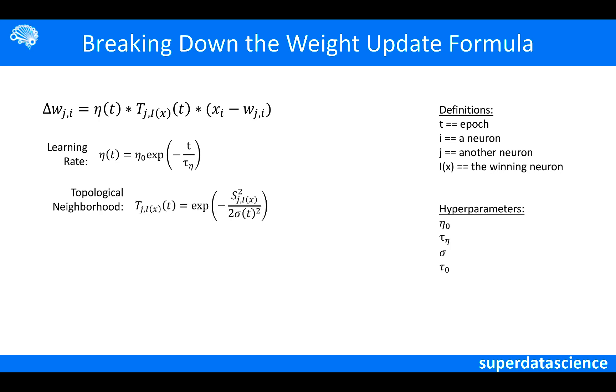The second variable is a topological neighborhood. It depends on the distance between neurons, the capital S, and also the neighborhood size, the sigma variable. The capital S is the lateral distance between neurons, and it is the Euclidean distance between neurons. The neighborhood size is a very similar equation to the learning rate, and it has a similar impact. It depends on hyperparameters and the epoch. It also converges to a value over time.